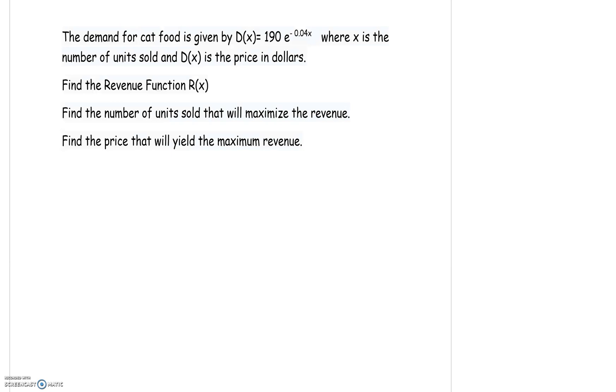So first of all, I think identifying the variables and just making sure we understand what the variables are would be a good start. So starting with what X represents. In this problem X is the number of units sold, and in this case we're talking about units of cat food. And the D of X they identify is the price in dollars.